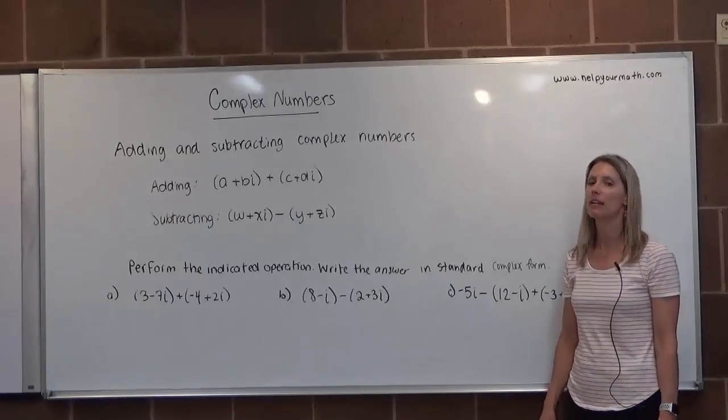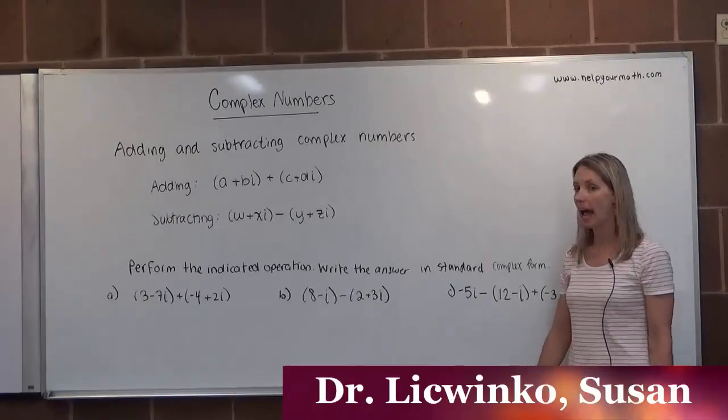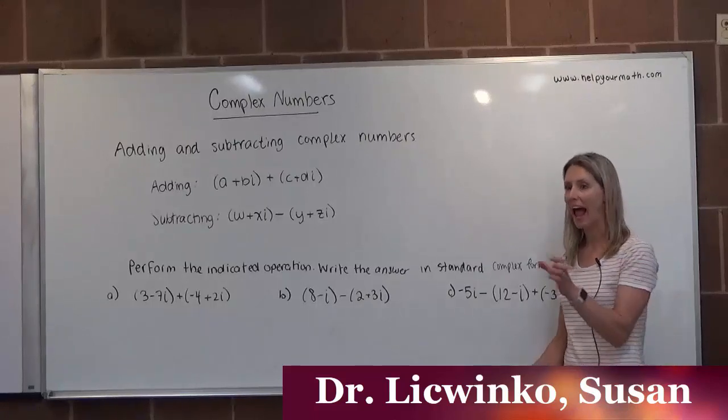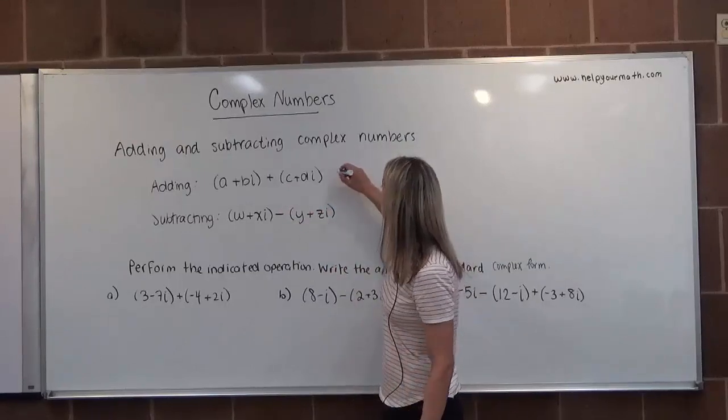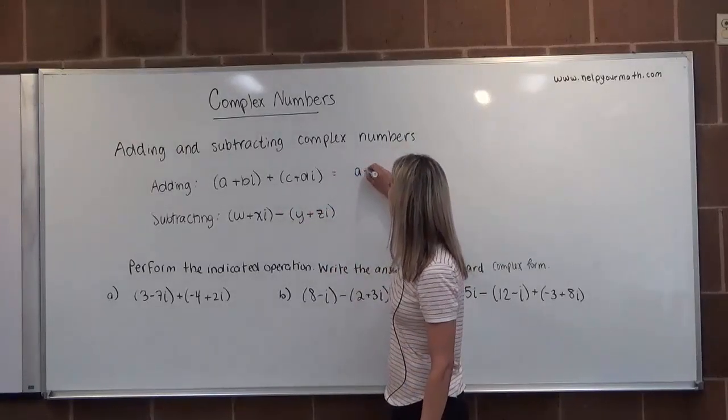In this video, we're going to look at adding and subtracting complex numbers. If we're going to add two complex numbers, we're going to add the real parts together. Here the real part is A and here the real part is C, so we would add together A plus C.